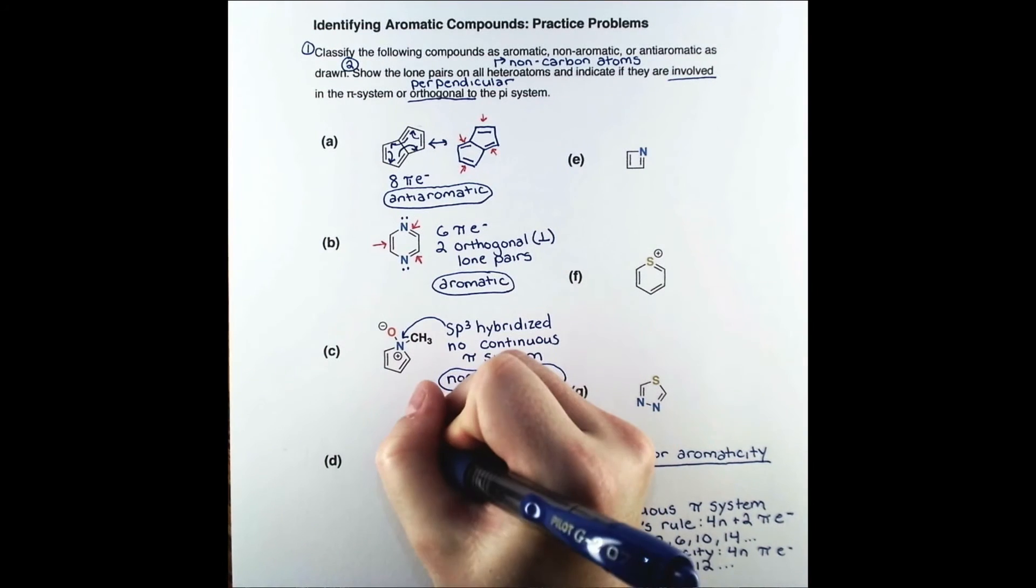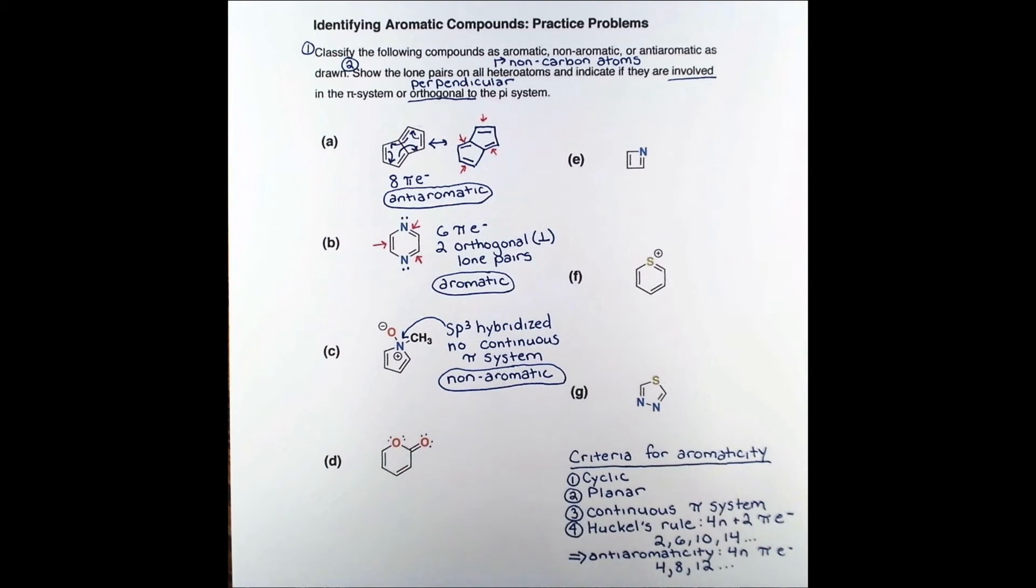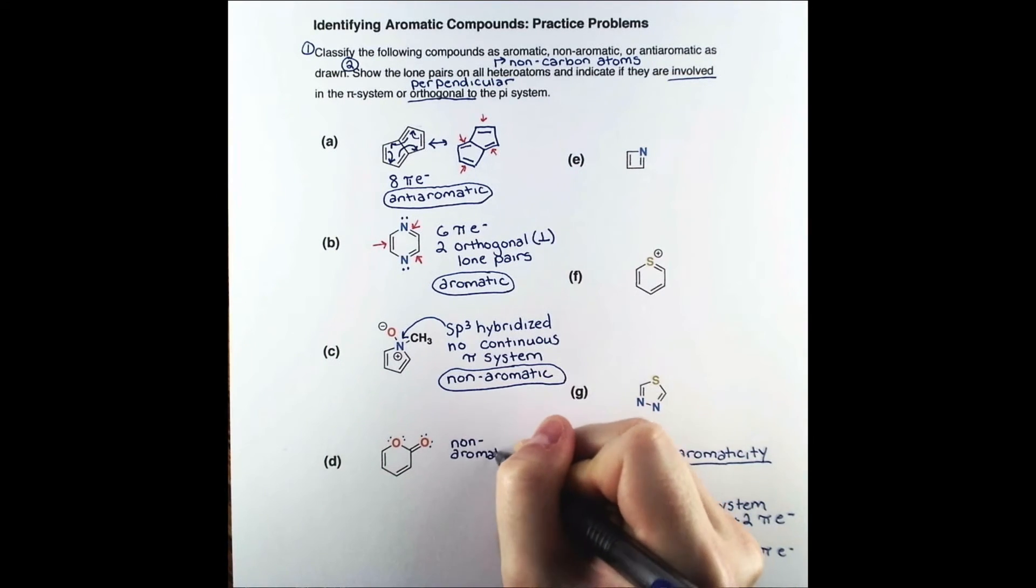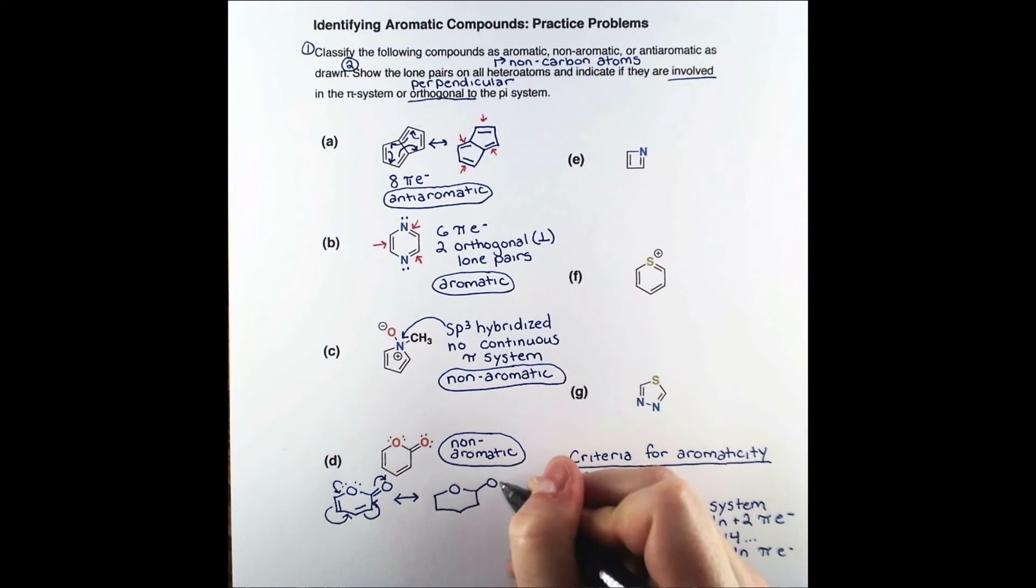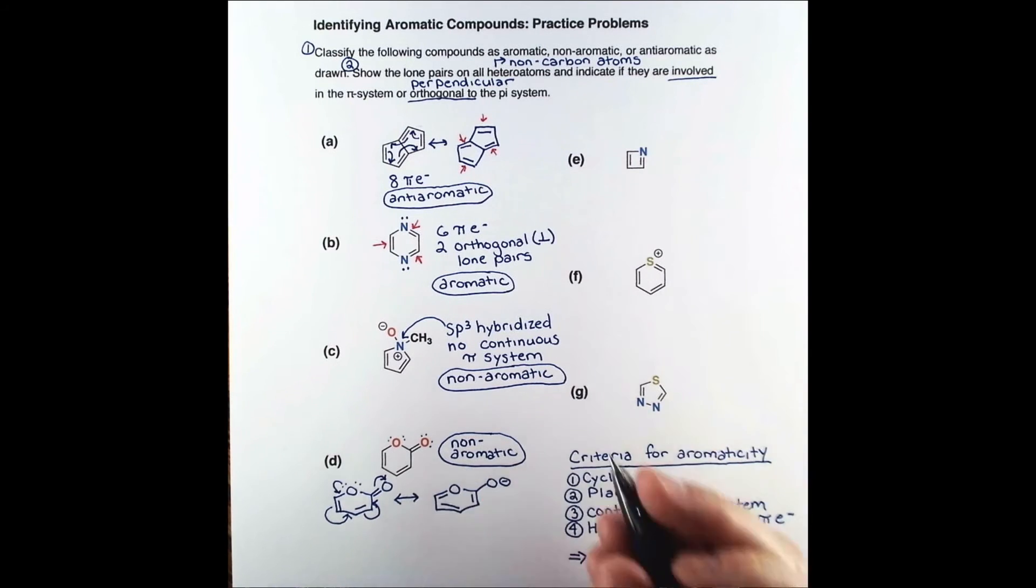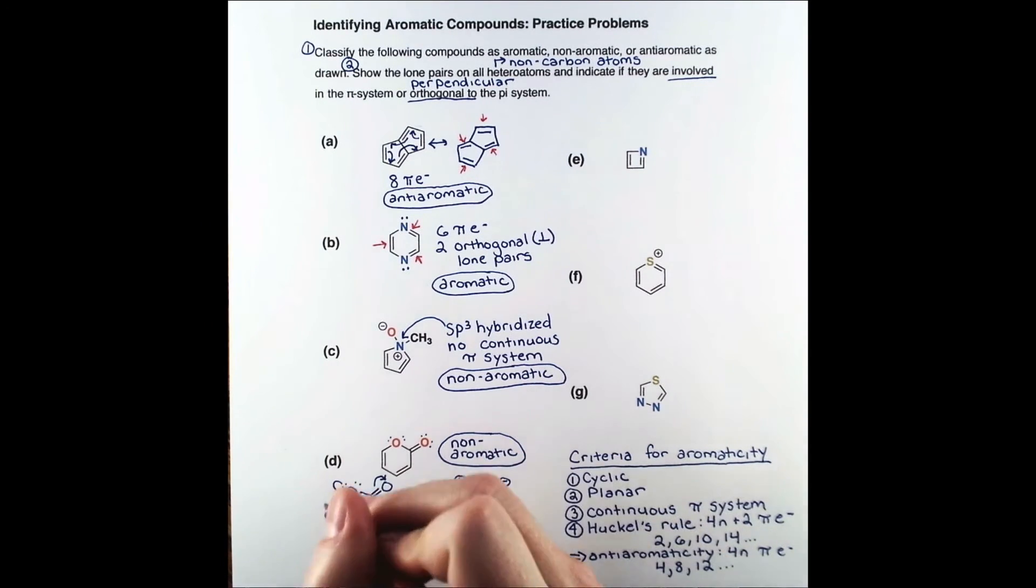Problem D is an interesting example. Each oxygen has two lone pairs, so each atom in the ring has either a lone pair or is sp2 hybridized. However, this compound is non-aromatic as drawn. Let's examine why. We can show a resonance form by pushing electrons through the entire conjugated system, putting a negative charge on the oxygen outside of the ring and using one of the lone pairs of the ring oxygen.